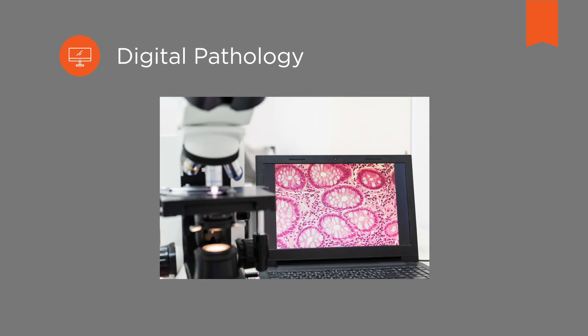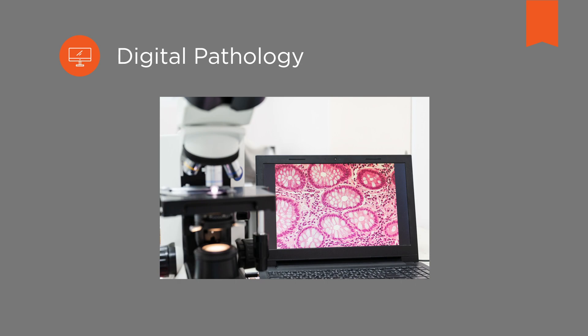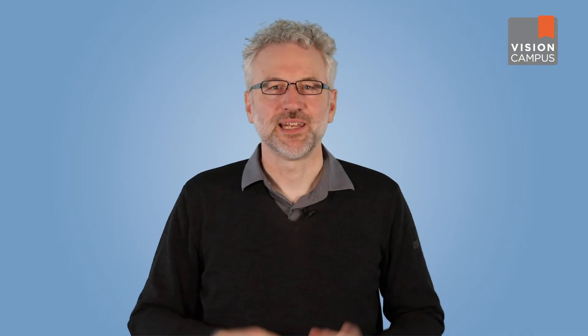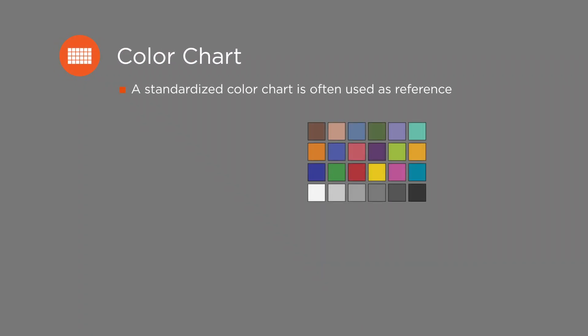For more demanding applications such as digital pathology, where color precision is crucial for analysis, the color settings must be calibrated for the specific setup. Calibration is based on test images under real conditions, which means under the same light conditions as in the intended application. To optimize the color settings, a standardized color chart is often used as a reference.